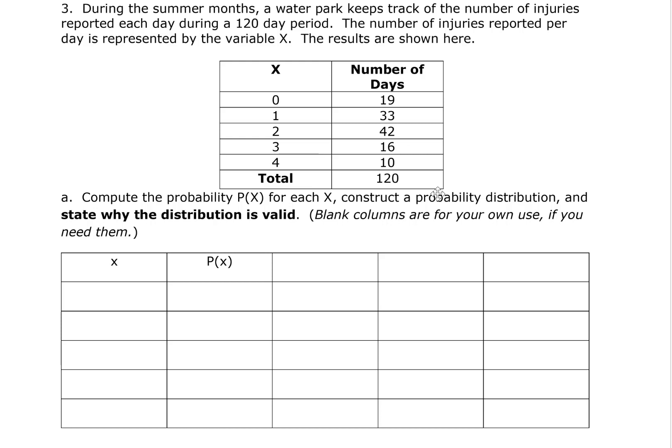Let's move on to the next problem. We're tracking water park injuries over a total of 120 days. The number of injuries is reported in this chart. For example, there were 16 days out of these 120 where there were three injuries recorded at the water parks. We're going to compute probability for each one of these numbers of injuries. The first question is how many days did we have zero injuries? The answer is 19 out of 120 days. 19 divided by 120 is 0.158 approximately.